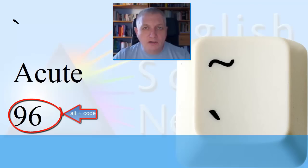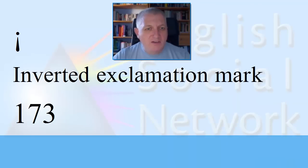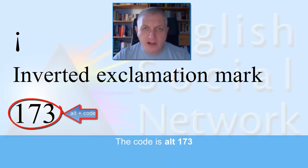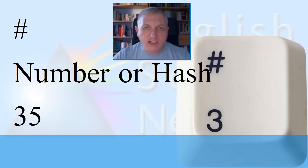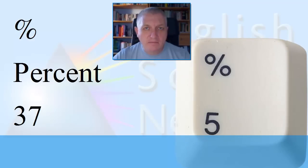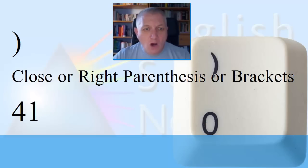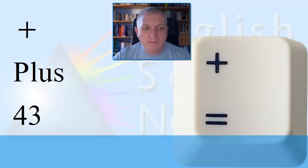The first symbol is the tilde. The acute. The exclamation mark or exclamation point. The inverted exclamation mark — this is found on Spanish keyboards, the code is ALT 173. The at, which is found in all email addresses. The number or hash symbol. The dollar sign. The percent. The caret. The bracket. The ampersand. The asterisk. The open or left parenthesis or brackets. Close or right parenthesis or brackets. The underscore or horizontal bar. The plus sign.